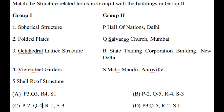The correct answer is P3 — Hall of Nations with octahedral lattice structure. Q5 — Salvakeo Church, Mumbai, is a shell roof structure. R4 — State Trading Corporation Building, New Delhi, has virendal girders. And S1 — Mathri Mandir, Auroville, is a spherical structure.